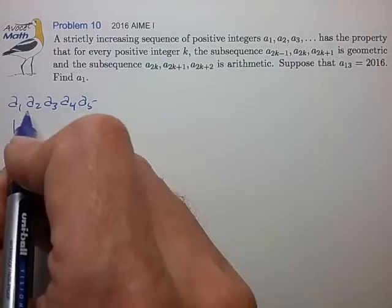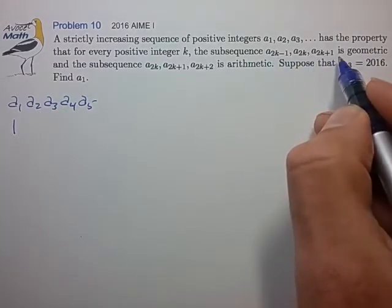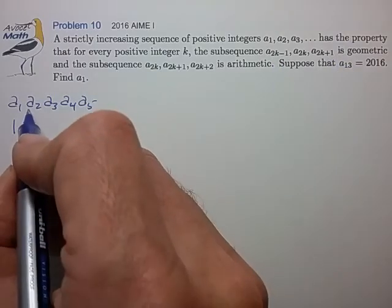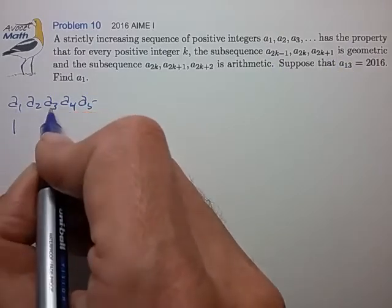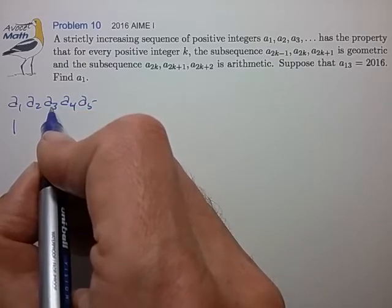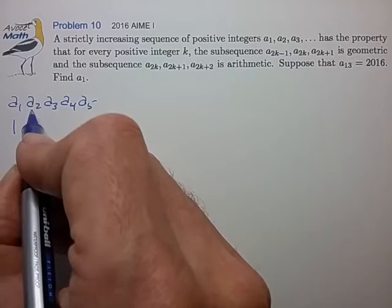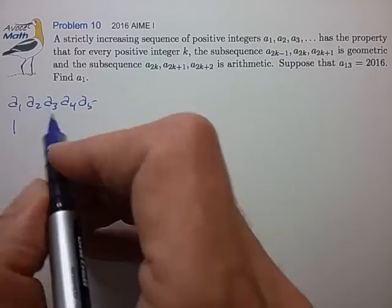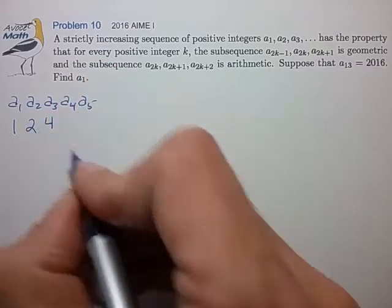And these first three are centered around an even index, so that means they have to be spaced geometrically. That means that A2 is the geometric mean of A1 and A3. So when I multiply A1 times A3 and I take the square root, I better get an integer. So it seems like the simplest number I can choose for A3 would be four, which would then make A2 equal to two.